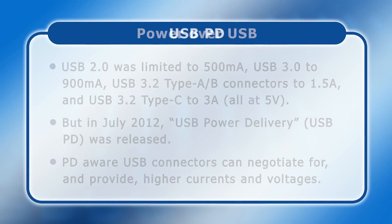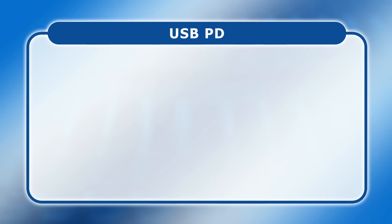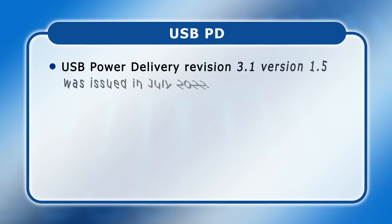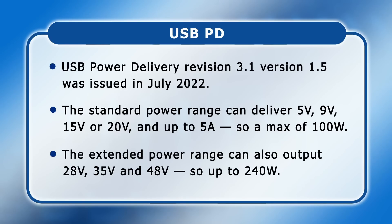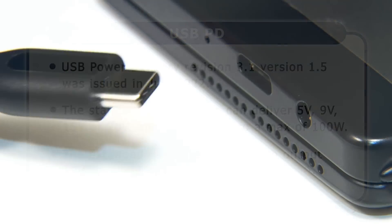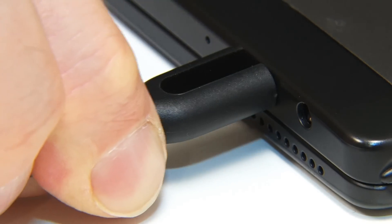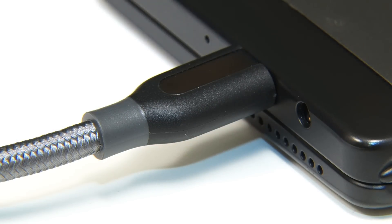Over the past 10 years the USB PD specification has been updated on many occasions, with the latest version issued in July 2022. This supports two power ranges: the standard power range, which can deliver up to 5 amps at 20 volts equating to 100 watts, and an extended power range which via USB Type C connector can now deliver up to 240 watts. USB-C connectors also look set to become an increasingly common means of charging and powering devices including laptops, monitors, tablets, and smartphones.